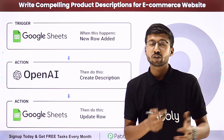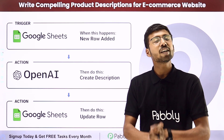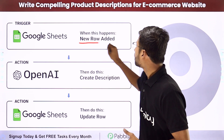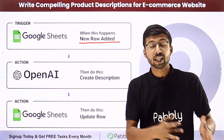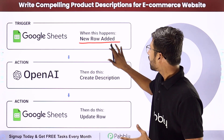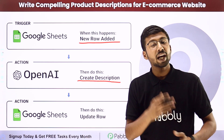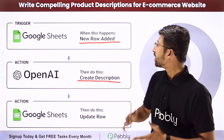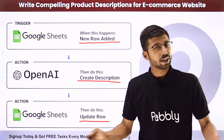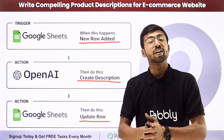You can completely automate the process of generating the product description with the help of OpenAI, an artificial intelligence platform. This automation works whenever we add a new row of data — like the product name and category — into a Google Sheet. It will trigger, get those details, automatically create the product description from OpenAI, and update that description into the same row of Google Sheet.